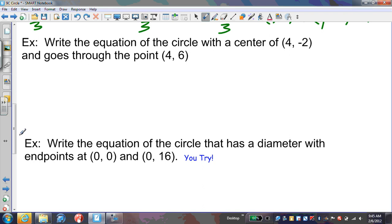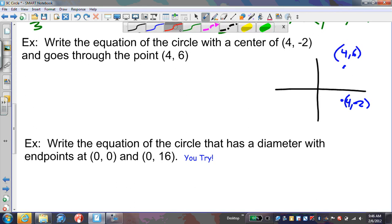The last example: what if we give you some information, can you write an equation? We'll sketch a graph with the center of the circle at (4, -2). It goes through the point (4, 6), so it goes through 4 and up to 6, way up here. The circle goes around the center.